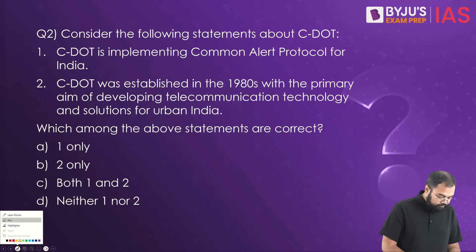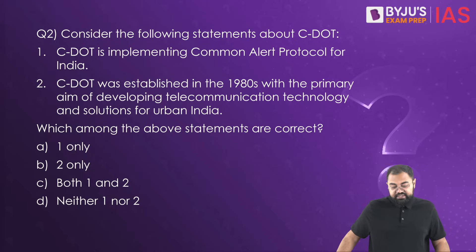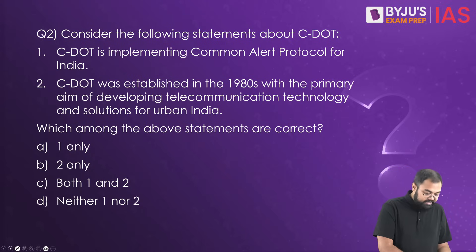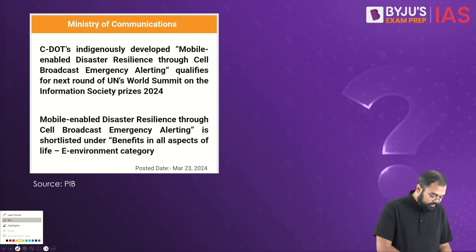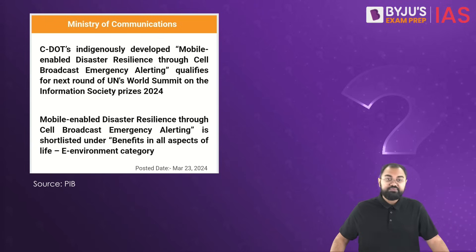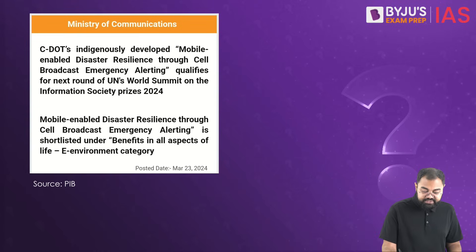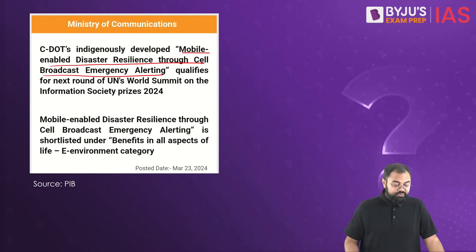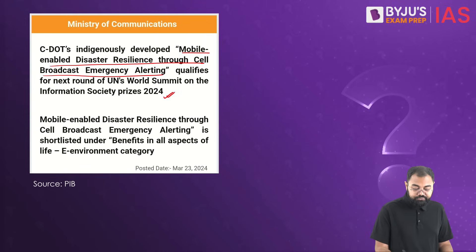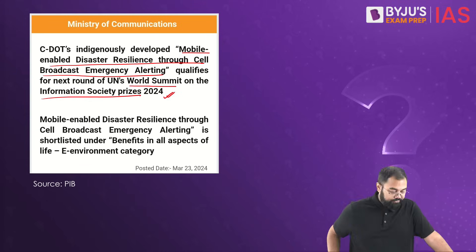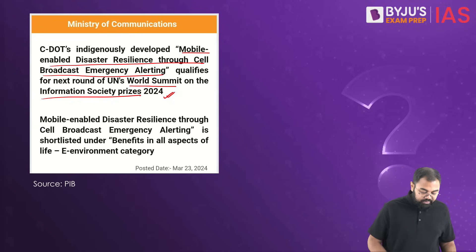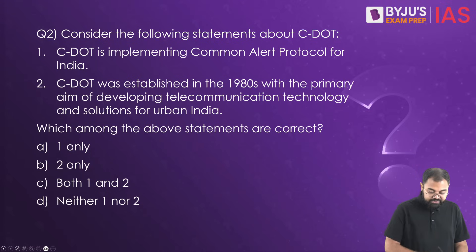Moving to question two: consider the following statements about C-DOT. We are discussing C-DOT because of an article in the PIB about an indigenously developed mobile-enabled disaster resilience system through cell broadcast emergency alerting, which has qualified for the second round of the UN World Summit on Information Society prizes 2024.